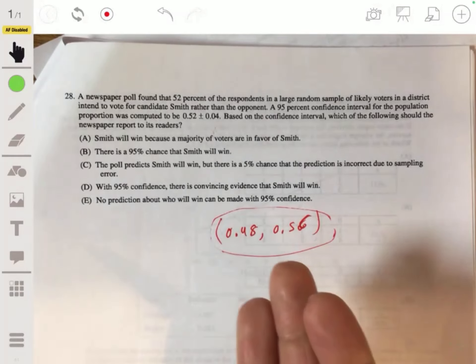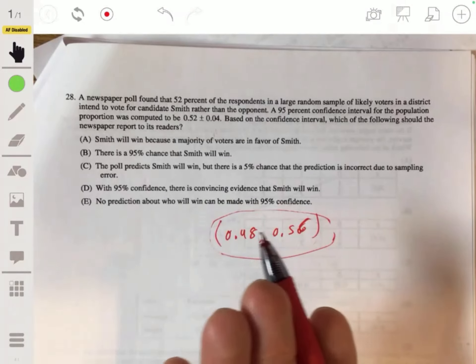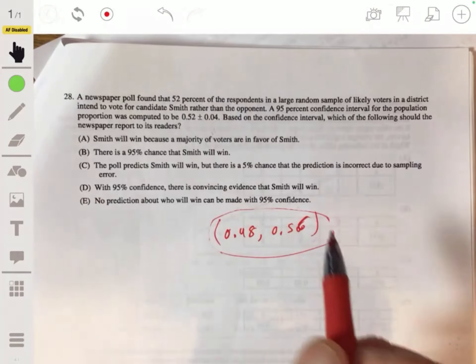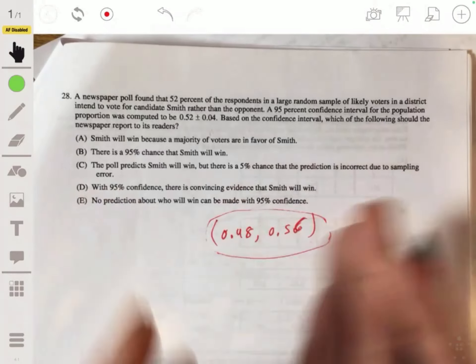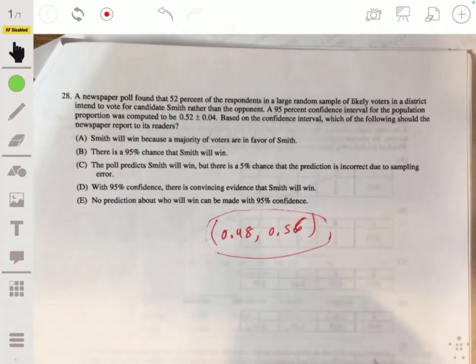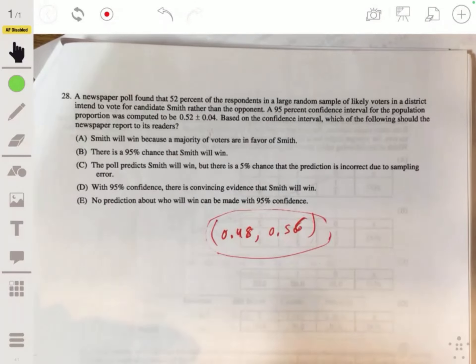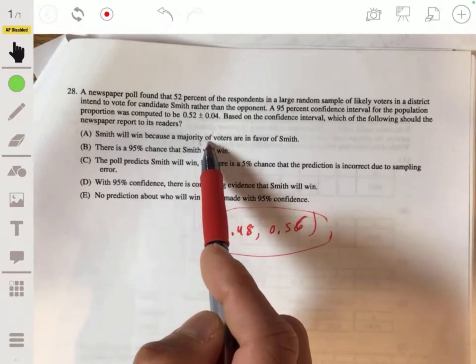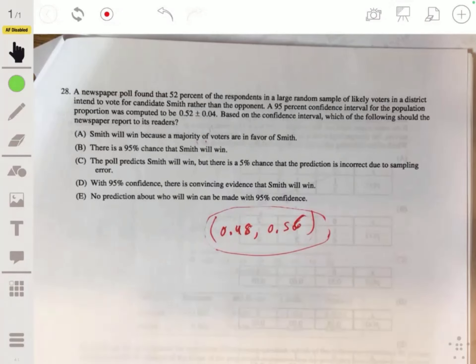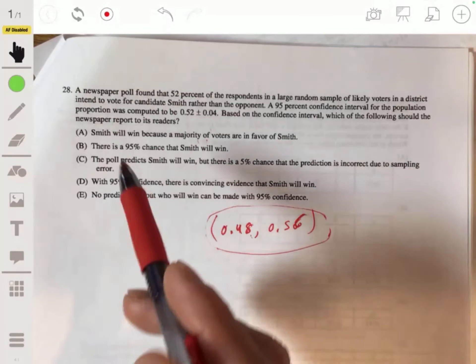So what would they report? Smith will win because the majority of voters are in favor of Smith. Okay, I see what they're getting at. So remember, this is an estimate. And we don't know if that's a true percentage. And then they did this statistical test and found this confidence interval. This means that any of these values could be the true value of proportion. So even 0.48, it's not saying that 0.52 is the most likely. Don't confuse that.